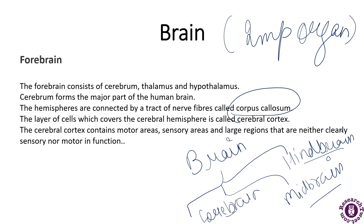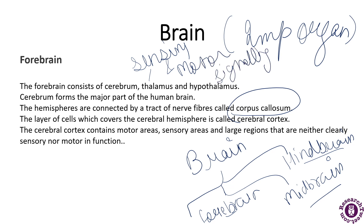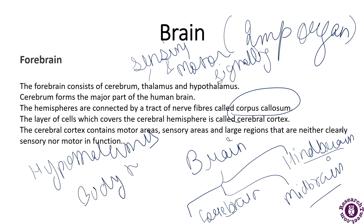The cerebrum wraps around a structure called the thalamus, which is a major coordinating center for sensory and motor signaling. Another important part is the hypothalamus, which lies at the base of the thalamus and contains a number of centers that control body temperature, the urge for eating and drinking. It also contains several groups of neurosecretory cells and various hypothalamic hormones. These are the three parts of the forebrain.